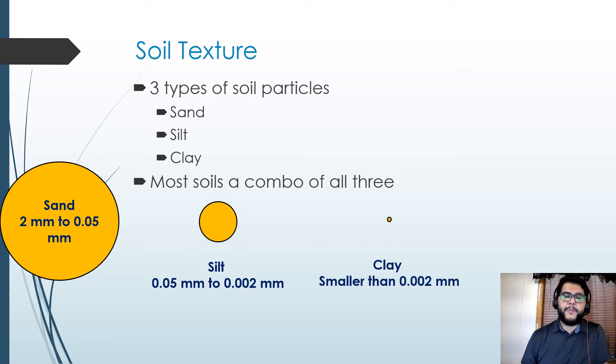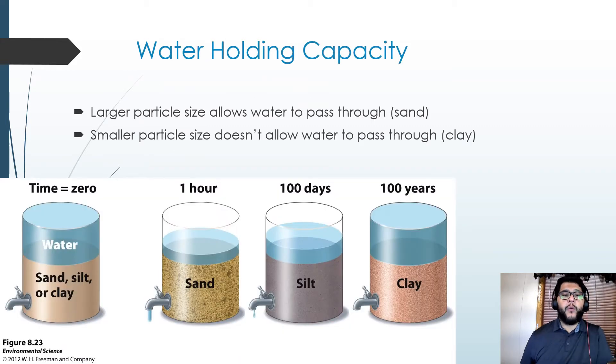Using that as a judgment call, you can see that there's going to be a very big difference in whether or not these things can let stuff through. The water holding capacity for these three different particles tends to be pretty different. A larger particle tends to let things pass through like sand, whereas smaller particles will hold things off.